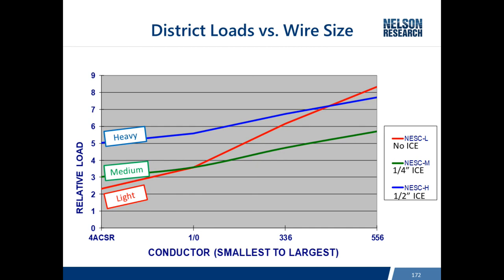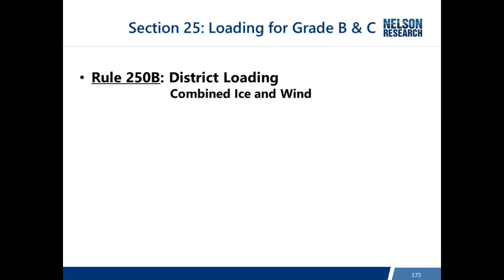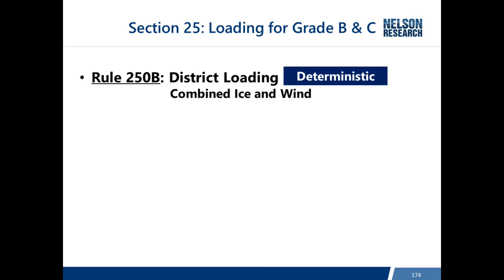Rule 250B district loading is deterministic, meaning it was not based on weather data with a known recurrence probability. It was established by engineers estimating the expected winter storm — for example, half an inch of ice and 40 mph wind in Pennsylvania's heavy loading district. Because these are deterministic loads, the load factor and strength factors differ from the next two load cases, which do have a known probability of occurrence.